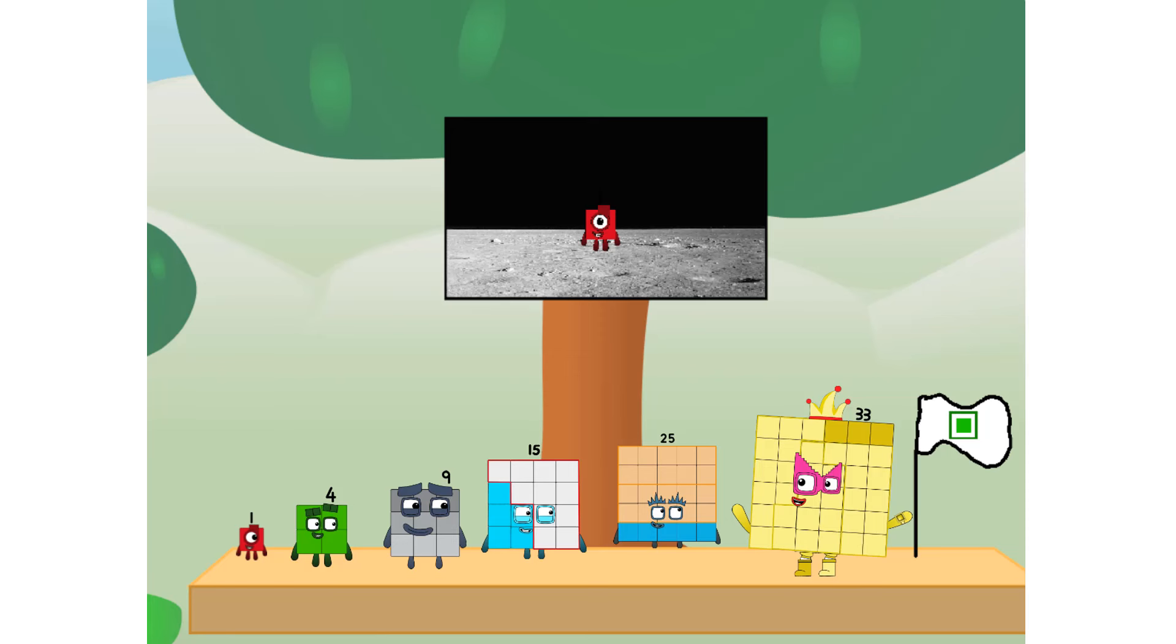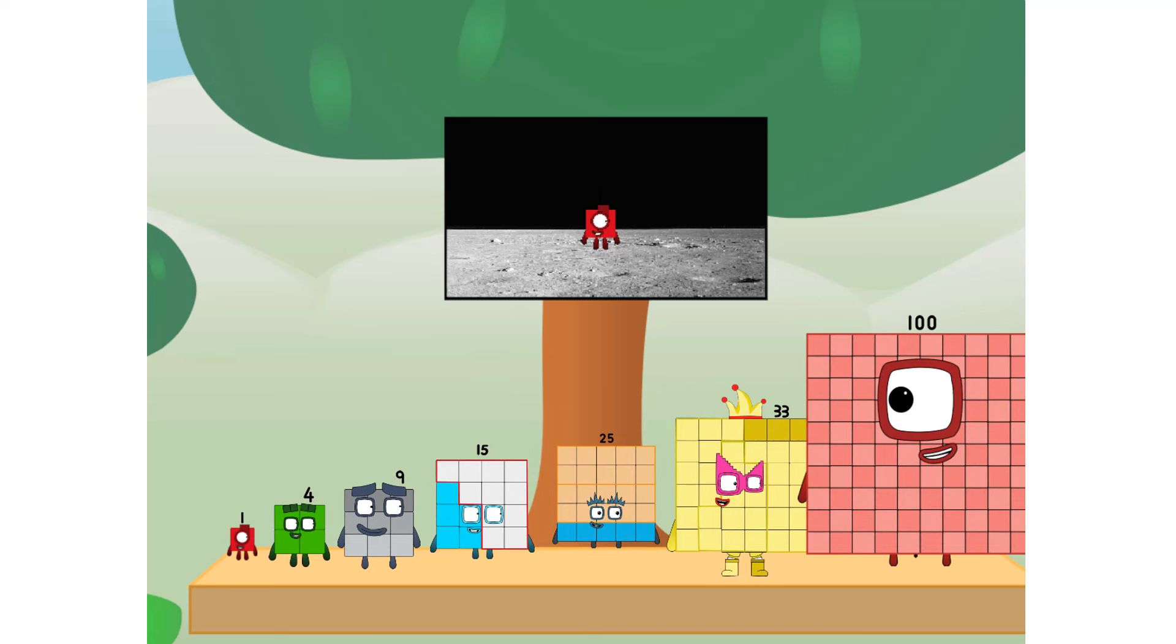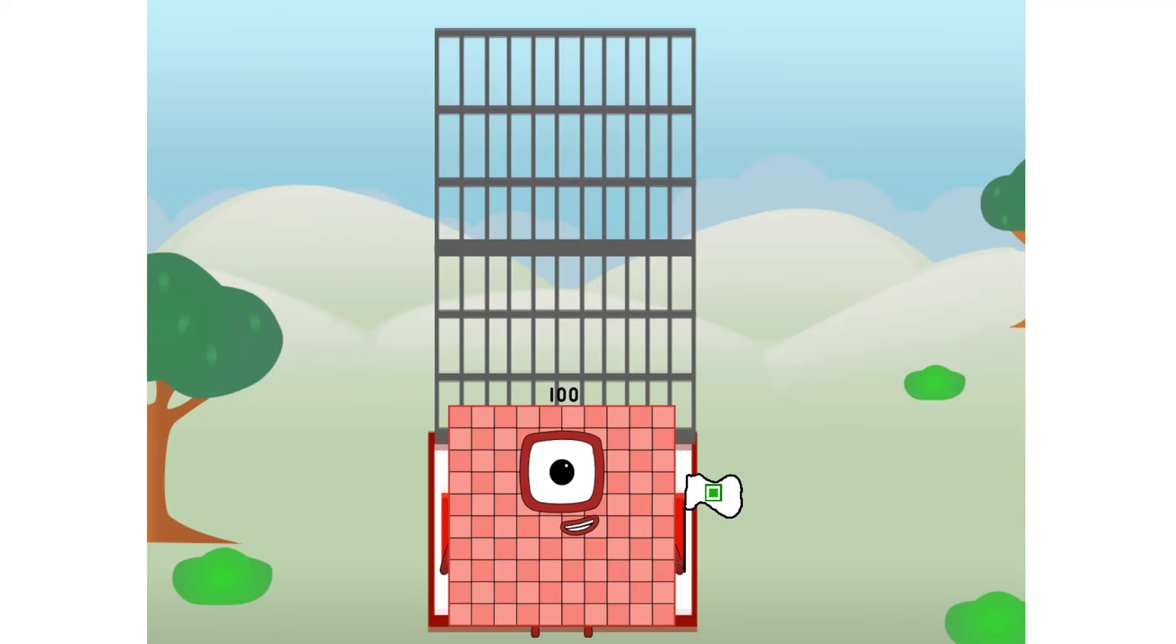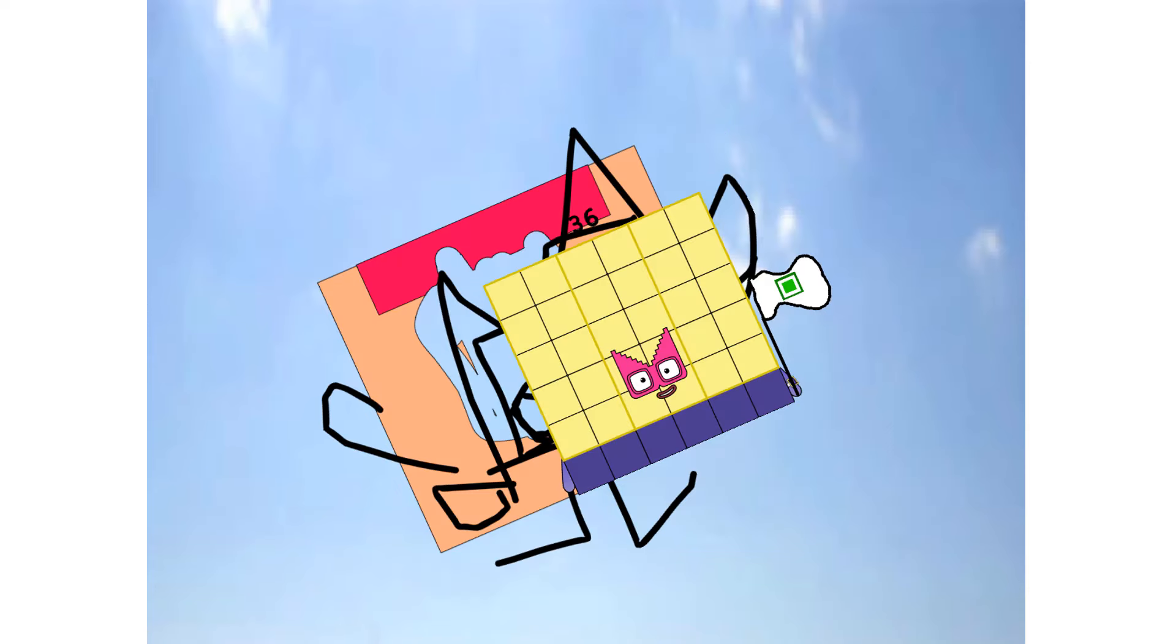We did it. The only thing left now is to plant the square club flag. Numberland, we have a problem. I forgot the flag. Don't worry little one, I'll take care of this. 91, and I promise, no rockets, square power only.